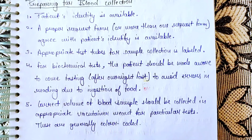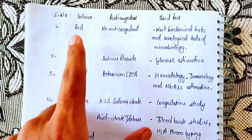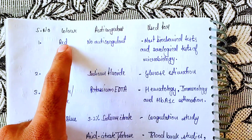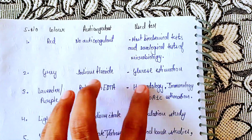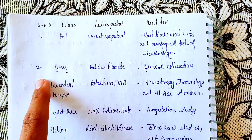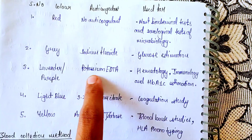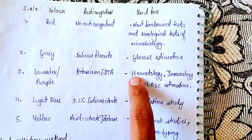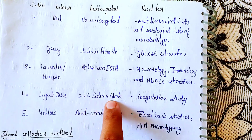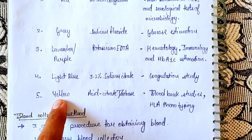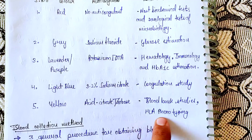There are generally color-coded tubes. A red tube has no anticoagulant and is used for biochemical, serological, and microbiological tests. A gray tube contains sodium fluoride and is used for glucose estimation. A lavender or purple tube contains potassium EDTA anticoagulant and is used for hematology, immunology, and HbA1C. A light blue tube contains sodium citrate and is used for coagulation studies. A yellow tube contains sodium citrate dextrose anticoagulant and is used for blood bank studies and HLA phenotyping.